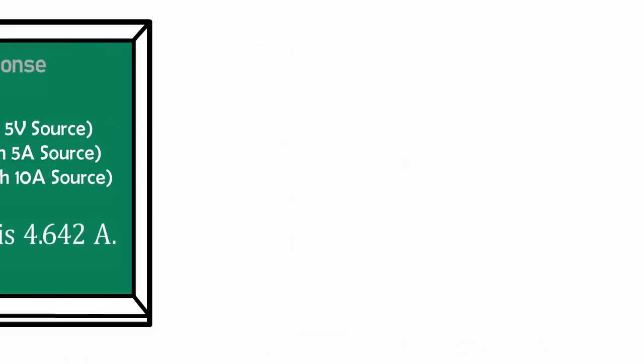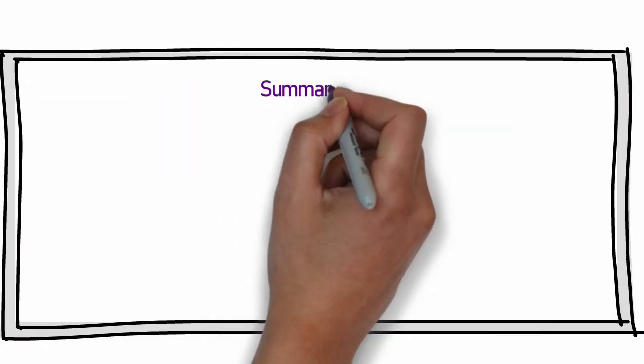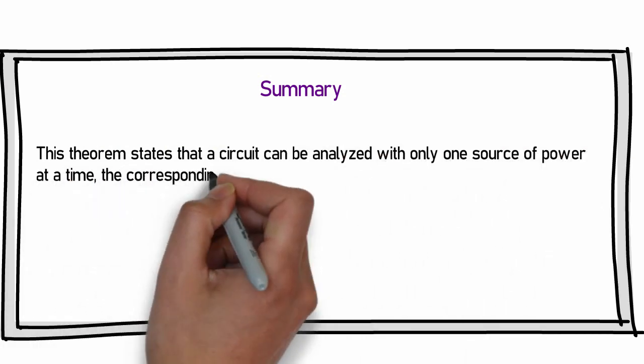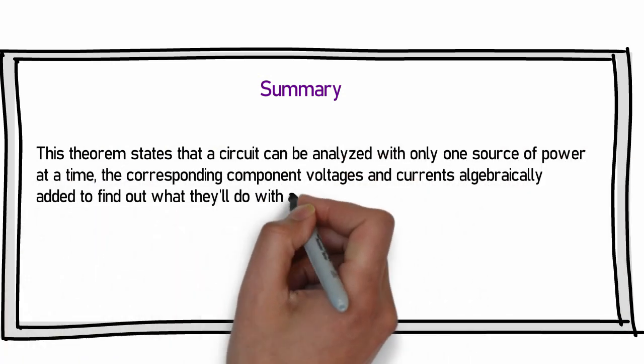After finding this load response, this theorem can be summarized as circuit can be analyzed with only one source of power at a time. The corresponding components, voltage and current,